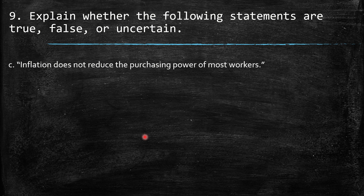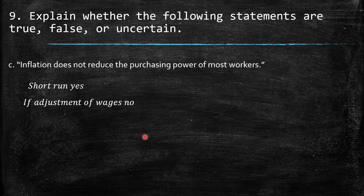Statement C: 'Inflation does not reduce the purchasing power of most workers.' This is uncertain. In the short run, when inflation rises and wages don't adjust immediately, workers are negatively affected in purchasing power. But if wages are adjusted to match inflation, purchasing power stays the same. In the long run, monetary changes affect only nominal variables, not real ones, so real purchasing power is not affected.